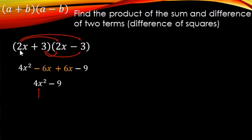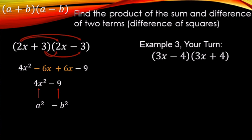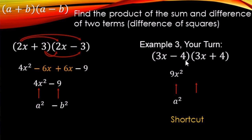That 4x squared came from the first number multiplied by itself, and the minus 9 came from positive 3 times negative 3. You just take the last number — it's minus that number squared. Let's have you try this one. Pause the video and come back. For the first term, take 3x and square it: 9x squared. For the last term, you're taking negative 4 times positive 4 — either square the 4 and make it negative, or just multiply negative 4 times positive 4. Either way, it's minus 16.